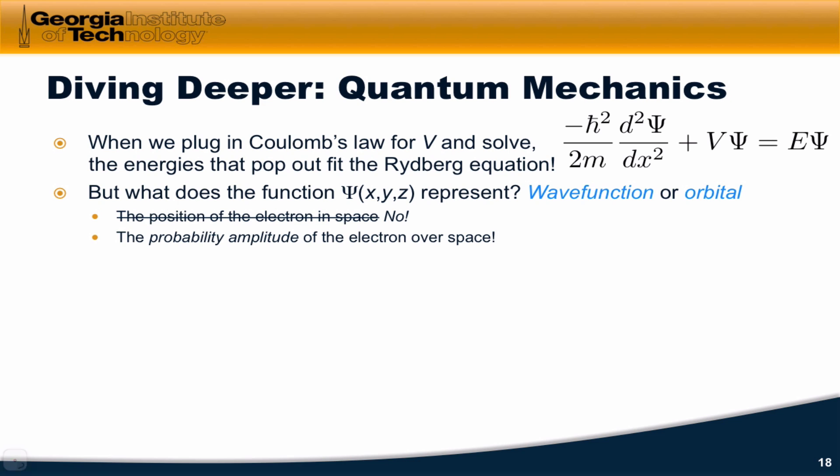What it does not represent is the position of the electron in space. That would correspond to a classical treatment, right? Classical physics was interested in understanding how the position of a particle changes with time given the potentials and kinetic energy that it's got and all that kinds of things.